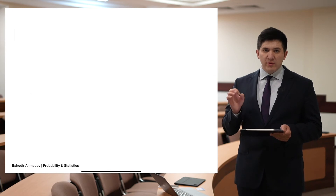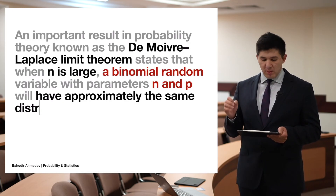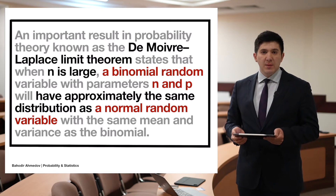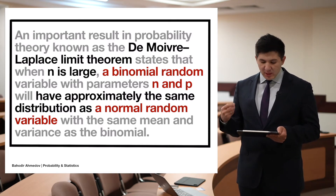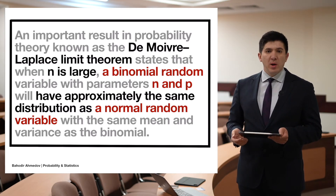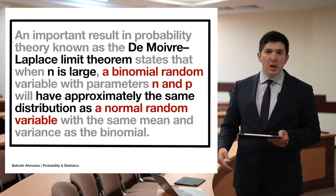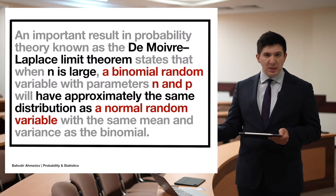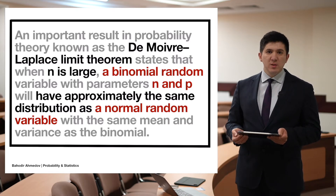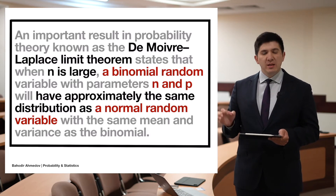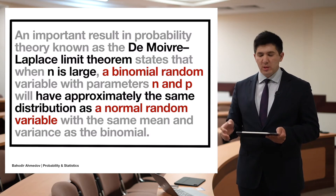There is one really important theorem in probability theory known as the de Moivre-Laplace limit theorem. It tells us that for large values of n, the binomial distribution can be approximated using the normal distribution, where the mean is n times p and the variance is n times pq — the same mean and variance as the binomial distribution.